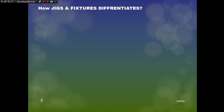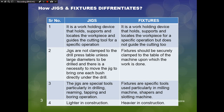The first difference: a jig is a work-holding device that holds, supports, and locates the work piece, and also guides the cutting tool for the specific operation. So jigs both hold and guide the cutting tool. The second difference: a fixture is a work-holding device that holds, supports, and locates the work piece for the specific operation but does not guide the cutting tool.